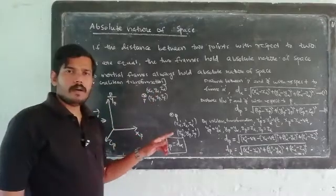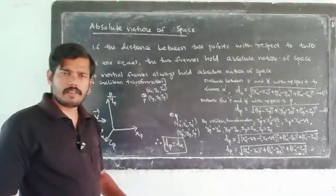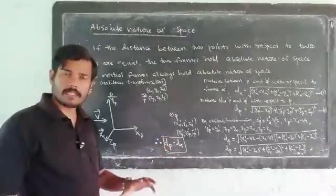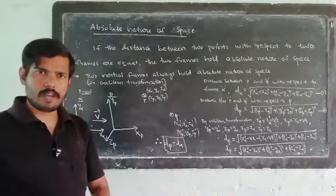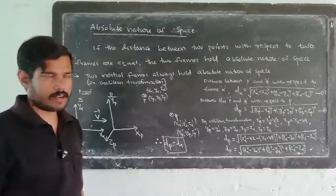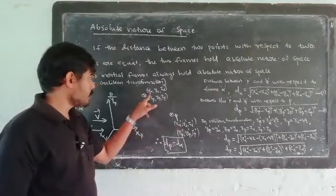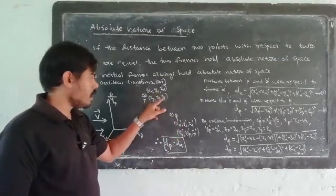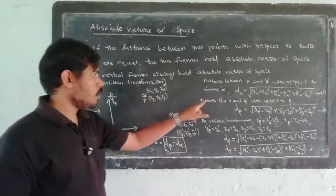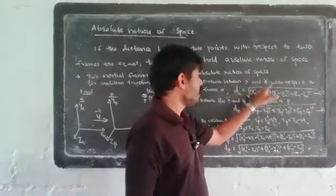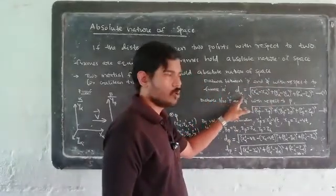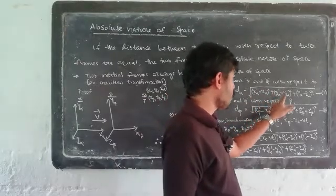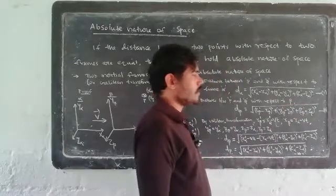The distance between two points is the square root of the sum of the squared differences of their coordinates. The distance d-alpha in frame alpha is equal to the square root of (x-alpha-dash minus x-alpha) squared plus (y-alpha-dash minus y-alpha) squared plus (z-alpha-dash minus z-alpha) squared. This is equation number 1.